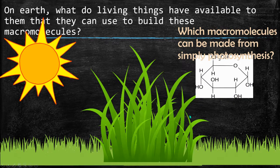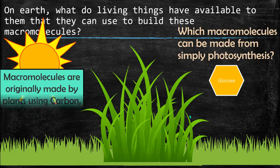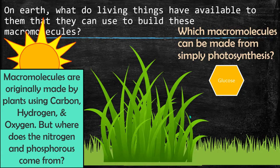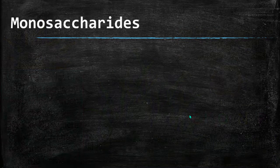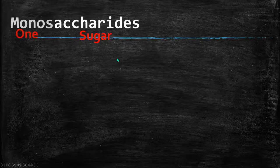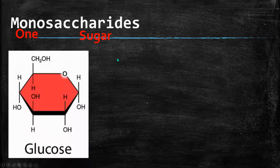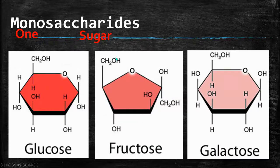From this point on in the PowerPoint, glucose will be shown as a single-sugar symbol — a monosaccharide. Mono means one, and saccharide means sugar. So monosaccharides: glucose is our major monosaccharide, but there's also fructose and galactose. They're all made of carbon, hydrogen, and oxygen from the carbon dioxide and water plants use during photosynthesis.